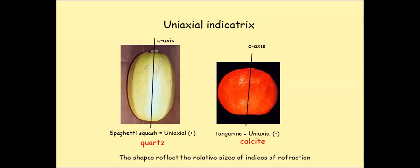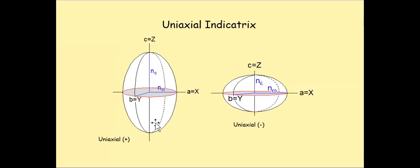For uniaxial indicatrix, as seen in the last lecture, quartz is an example of a uniaxial positive mineral and calcite is uniaxial negative. The indicatrix reflects the refractive indices in the e-ray and o-ray vibration directions. It is an ellipsoid with two axes: n-epsilon parallel to the e-ray vibration direction, and n-omega parallel to the horizontal direction. If n-epsilon is greater than n-omega, the mineral is uniaxial positive; if n-omega is greater than n-epsilon, it is uniaxial negative.